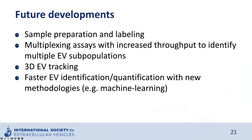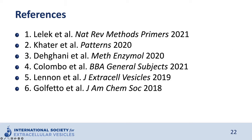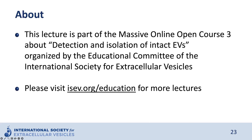In the future, I hope we will see advances in sample preparation and labeling. The development of multiplex assays with increased throughput and automation will help identify multiple EV subpopulations. Advances in 3D EV tracking can clarify EV biology, and faster EV identification and quantification with new methodologies will help streamline the approach. Here you will find the references mentioned during the lecture. I would like to acknowledge my former and current lab members, collaborators, and funding sources. Thank you so much for your attention.